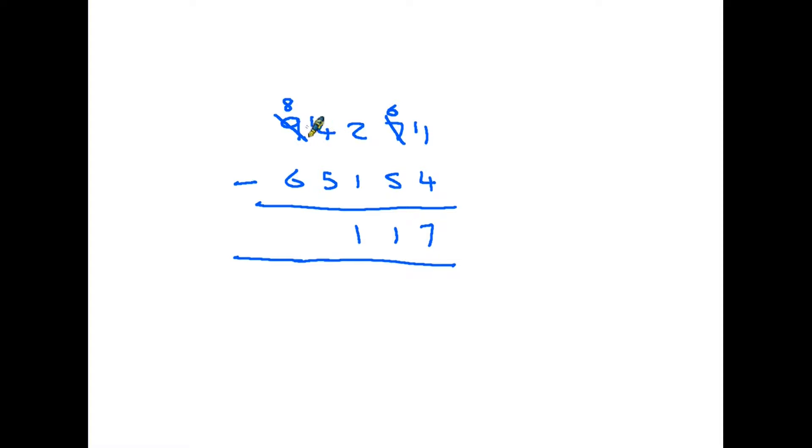And that turns that from a four into a fourteen. Fourteen take away five we can do because that's nine. The next column is eight take away six is two. And we've reached the end. Twenty-nine thousand, one hundred and seventeen.